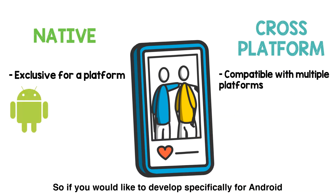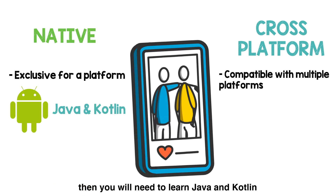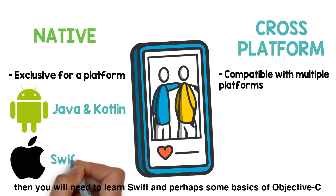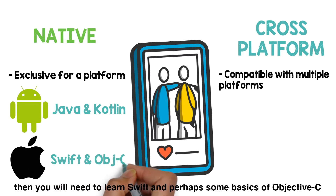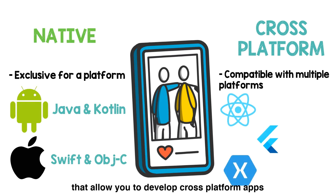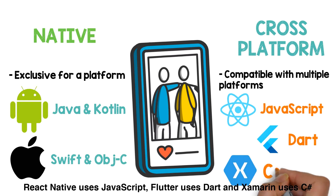So if you would like to develop specifically for Android, then you would need to learn Java and Kotlin. If you would like to develop specifically for iOS, then you would need to learn Swift and perhaps some basics of Objective-C. On the other hand, there are a number of different frameworks that allow you to develop cross-platform apps. To name a few, React Native uses JavaScript, Flutter uses Dart, and Xamarin uses C Sharp.